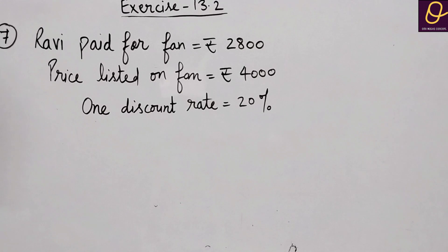Ravi pays rupees 2800 for a fan listed at rupees 4000. There were two successive discounts offered on the fan. If one of them is 20%, find the other discount percent.